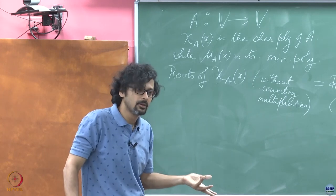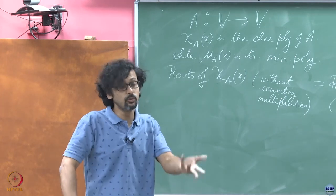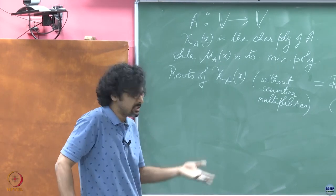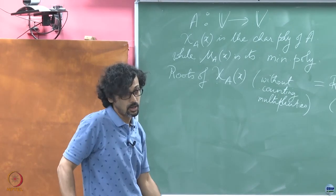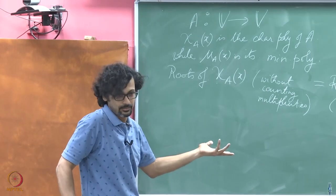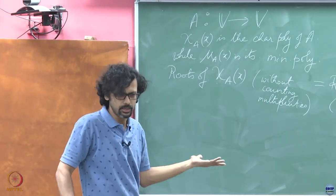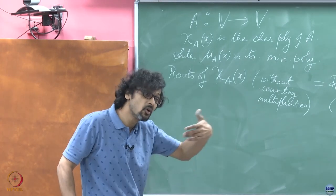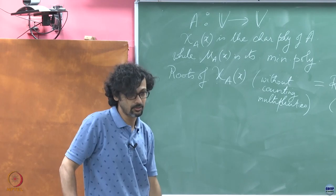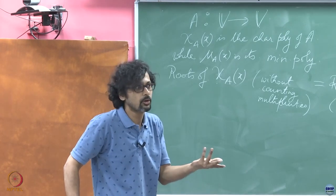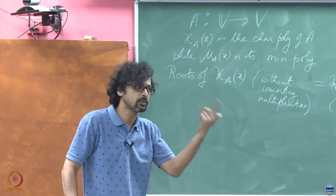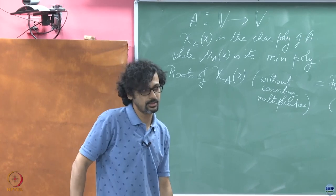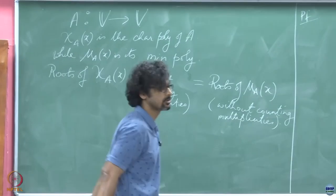We will later prove the Cayley-Hamilton theorem without using the determinant-based proof found in many texts. We will see, after a few lectures, that the minimal polynomial is the generator for the annihilating ideal of A, and the characteristic polynomial belongs to the annihilating ideal of A. Therefore, the characteristic polynomial must vanish when you pass in the argument A — which is Cayley-Hamilton's theorem: every matrix satisfies its characteristic polynomial.